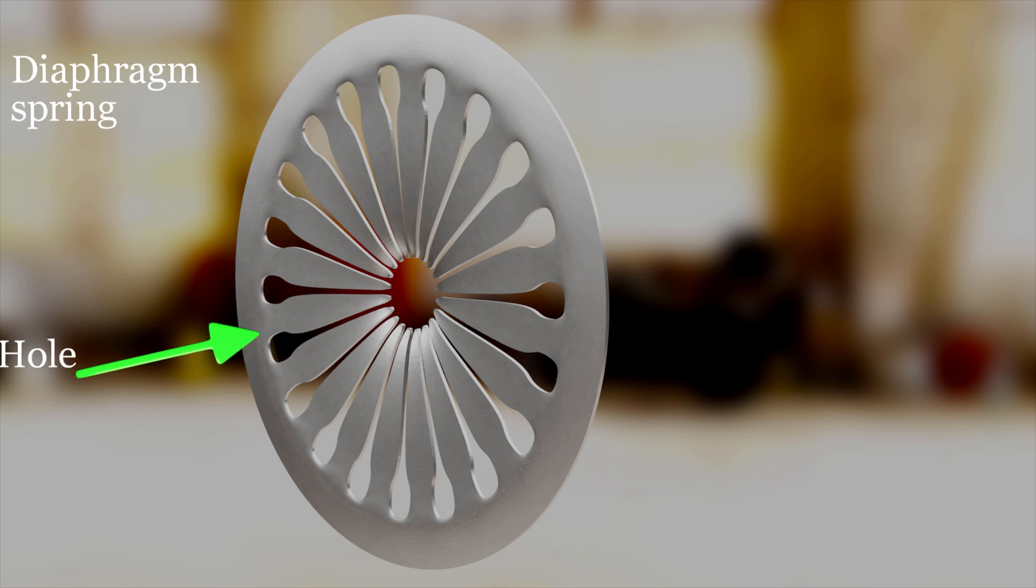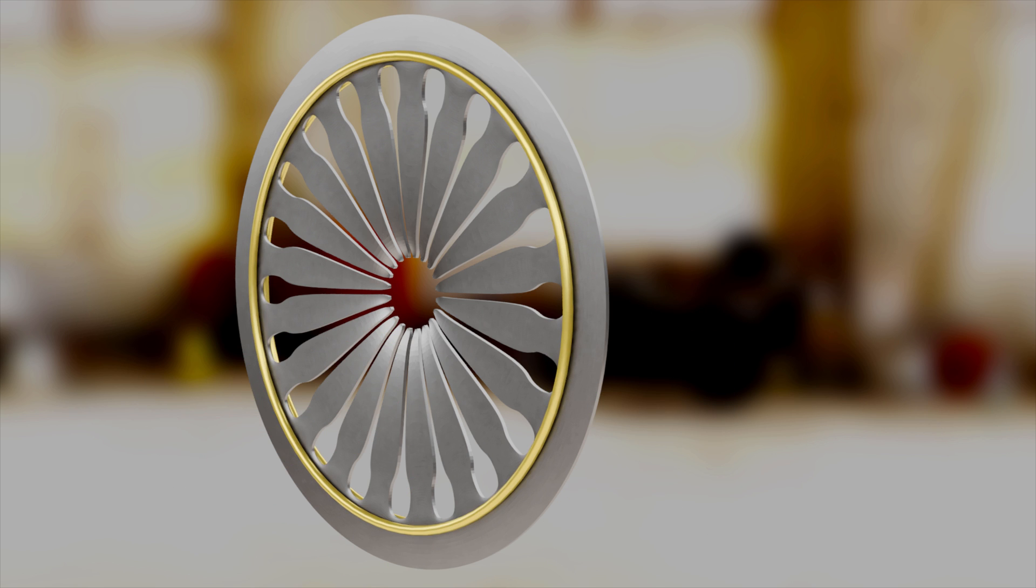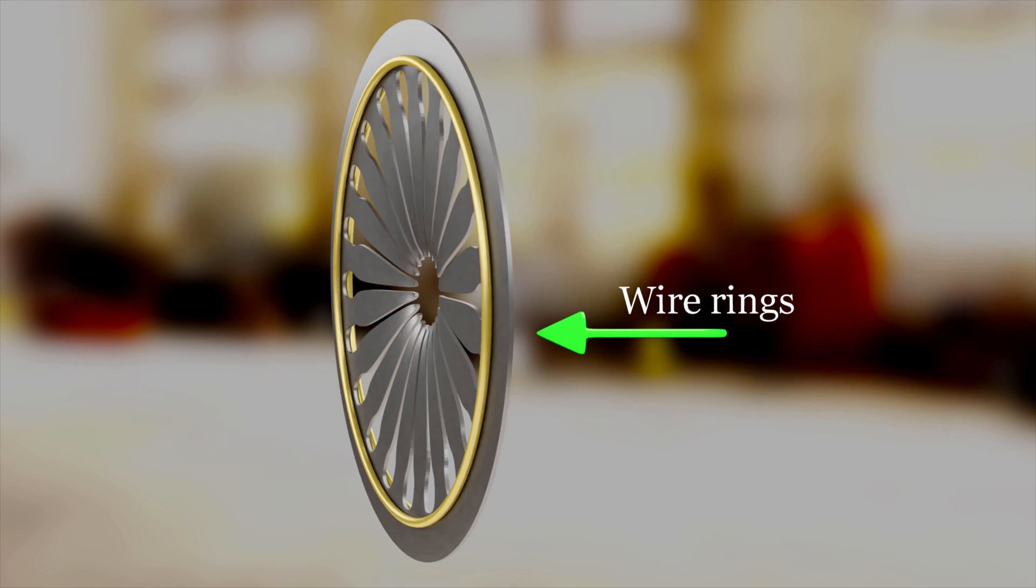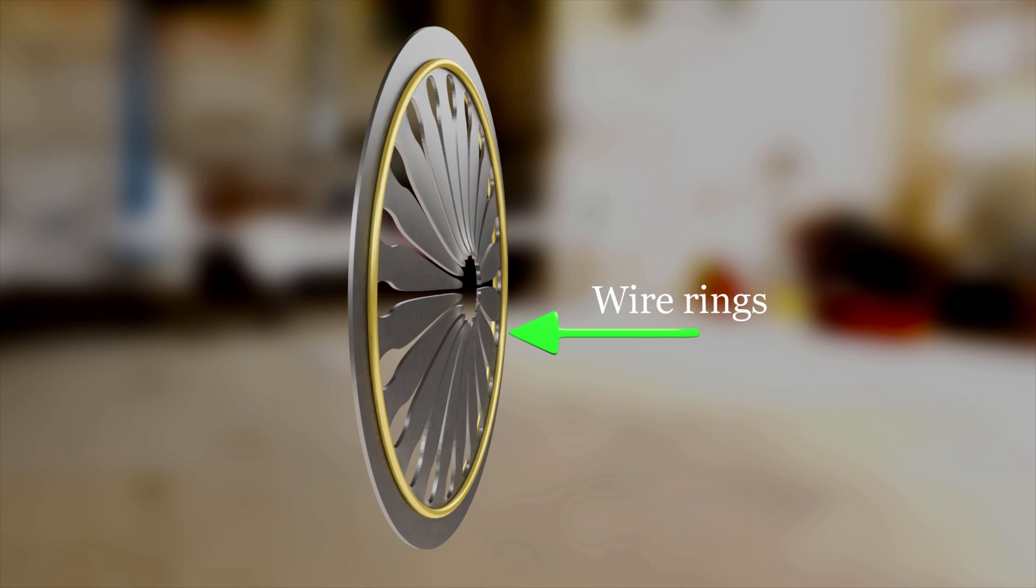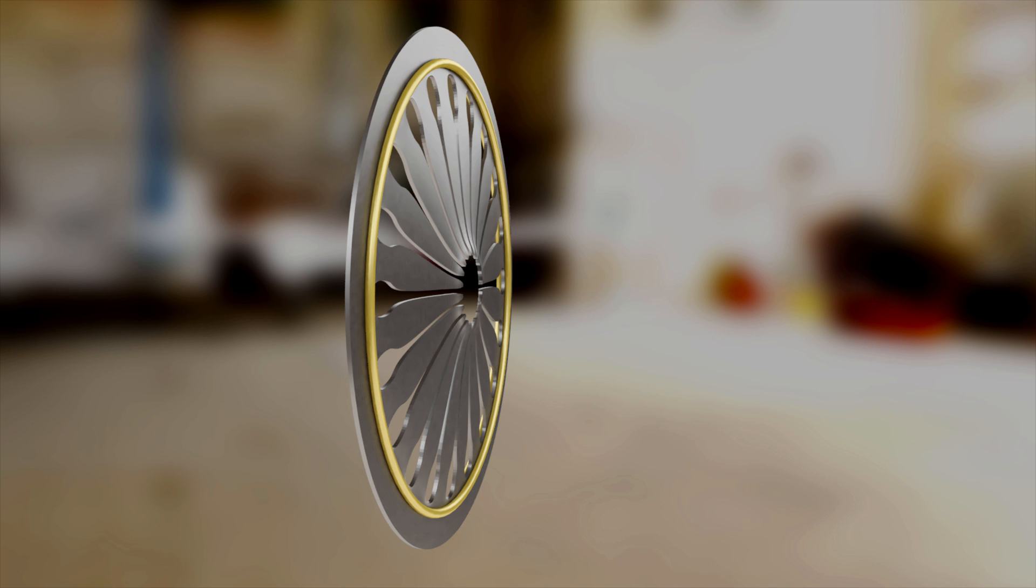The diaphragm spring is a disc-shaped spring having a hole at the center, and the disc is radially slotted. The motion of the diaphragm spring is fixed about two wire rings which are positioned at a short distance from its outer edge, one on each side of the spring.